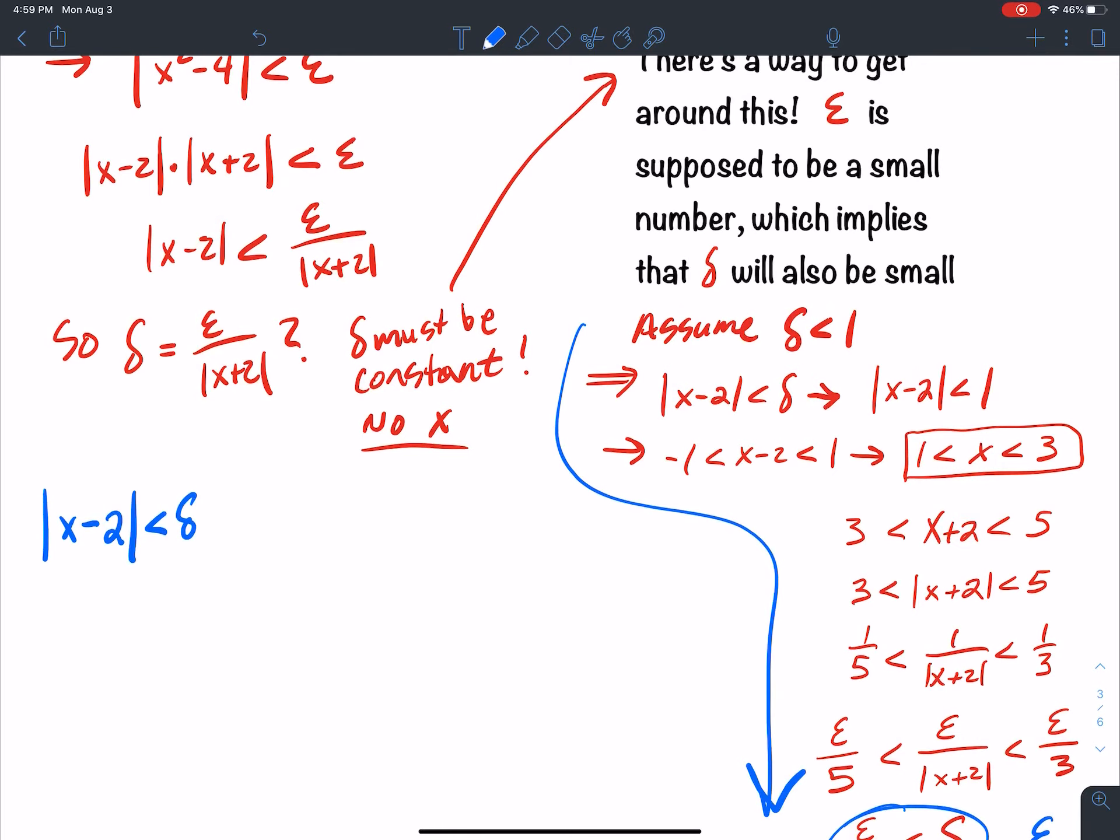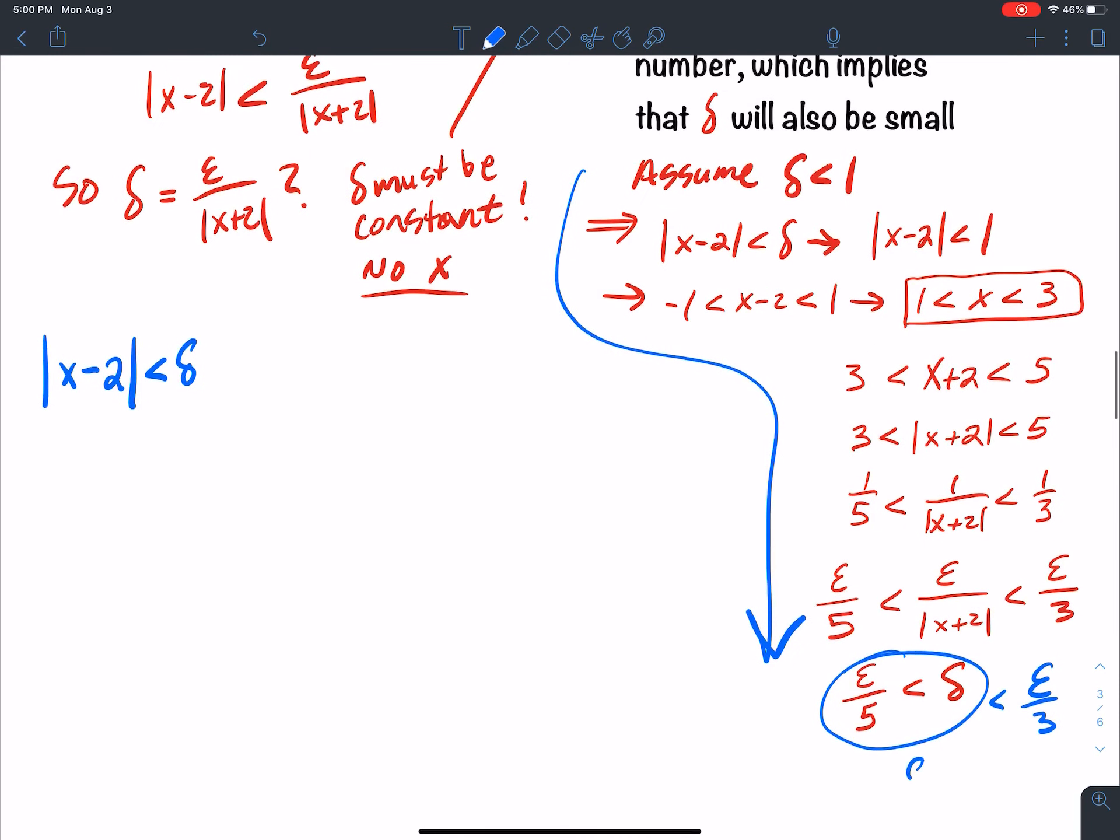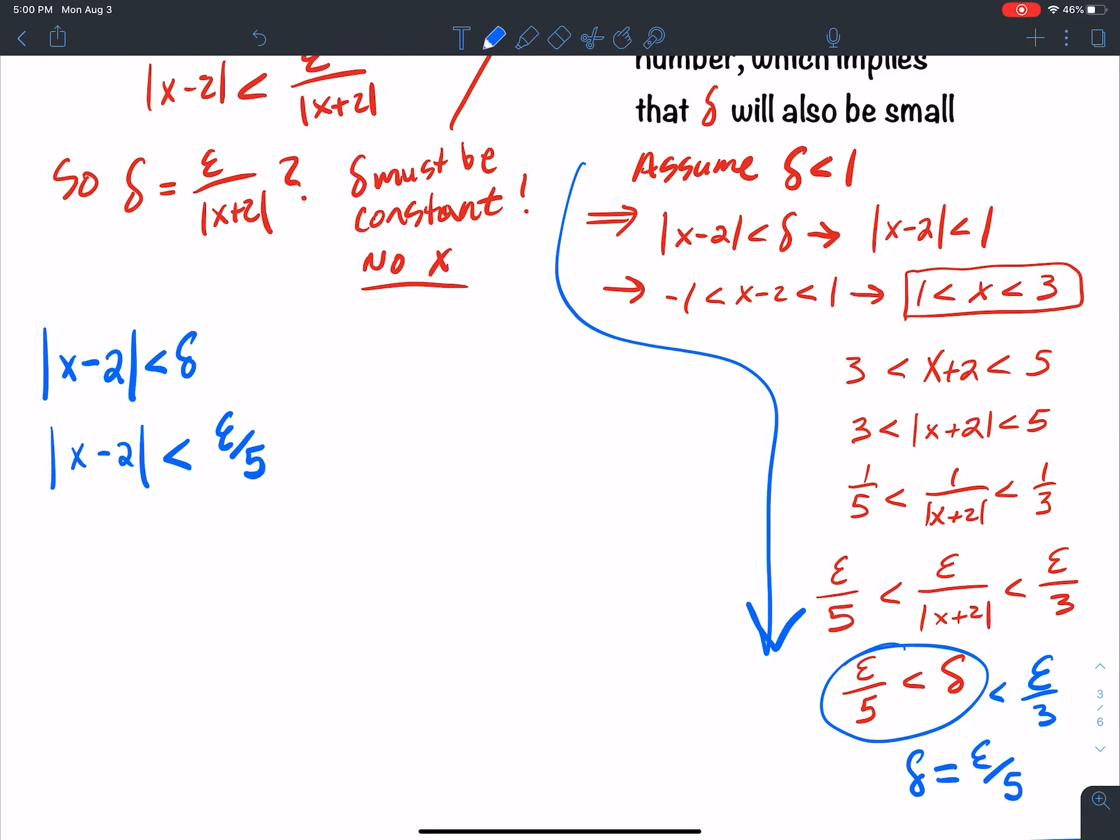Now, I'm choosing delta to be equal to epsilon divided by 5 here. So I'm going to replace delta with epsilon divided by 5, right? And what do I know?